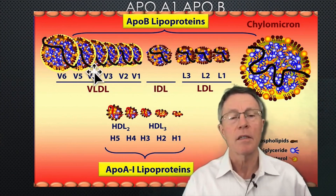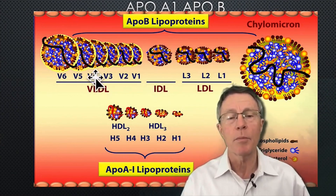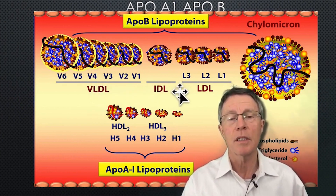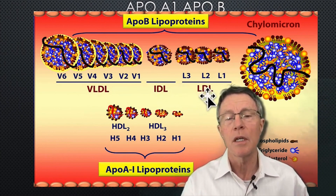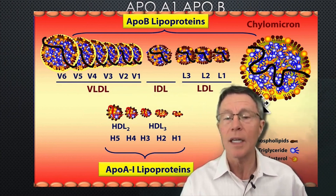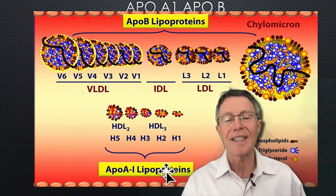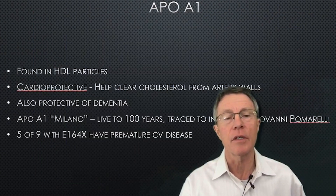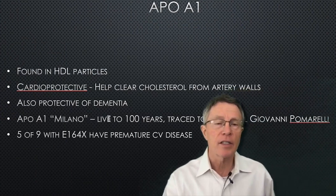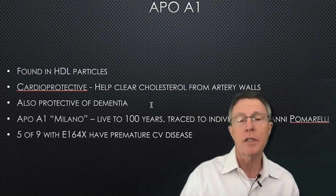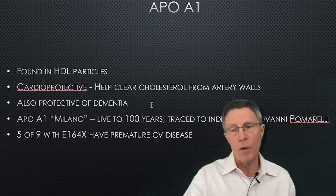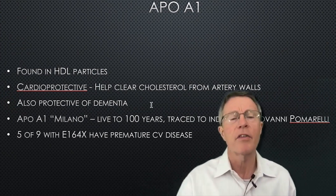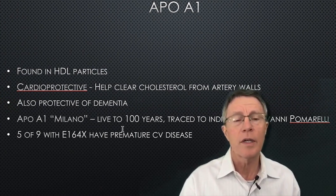ApoA1 is found in HDL particles. It's cardioprotective — it helps clear cholesterol away from arteries through reverse cholesterol transportation that you may have heard of. It is also protective against dementia.